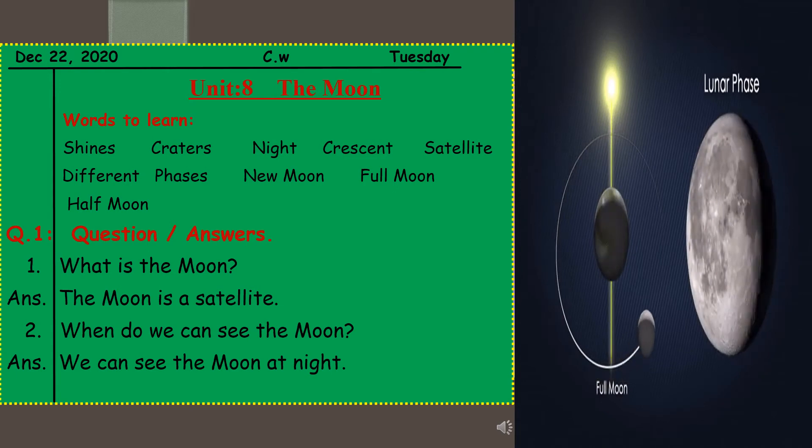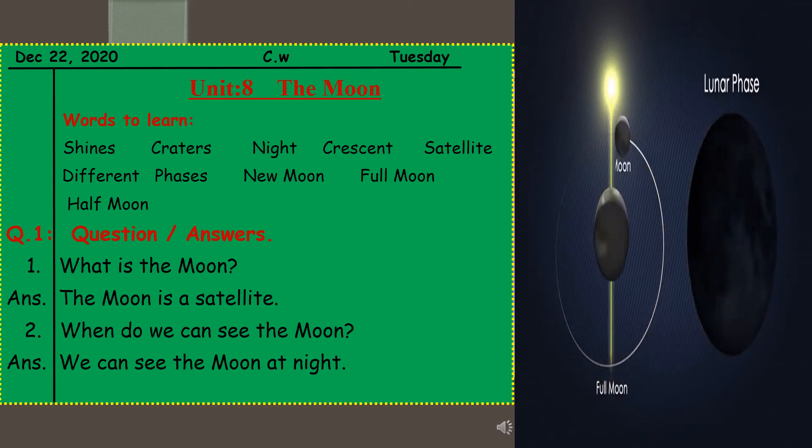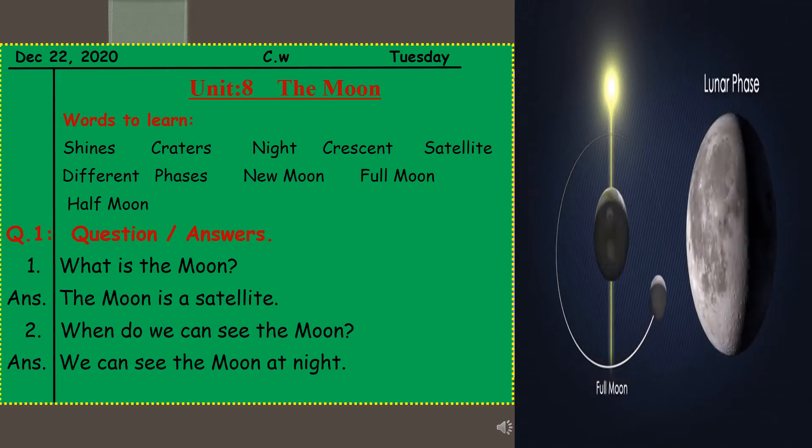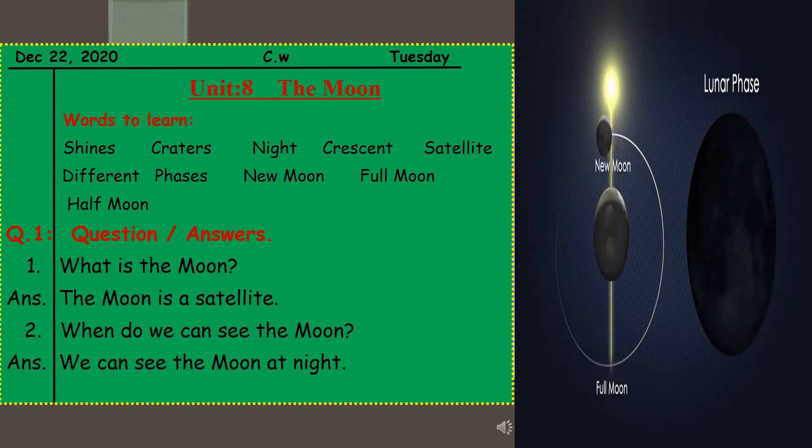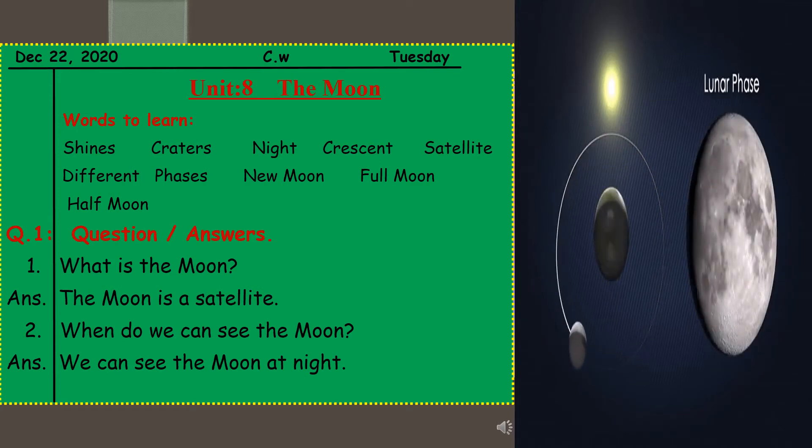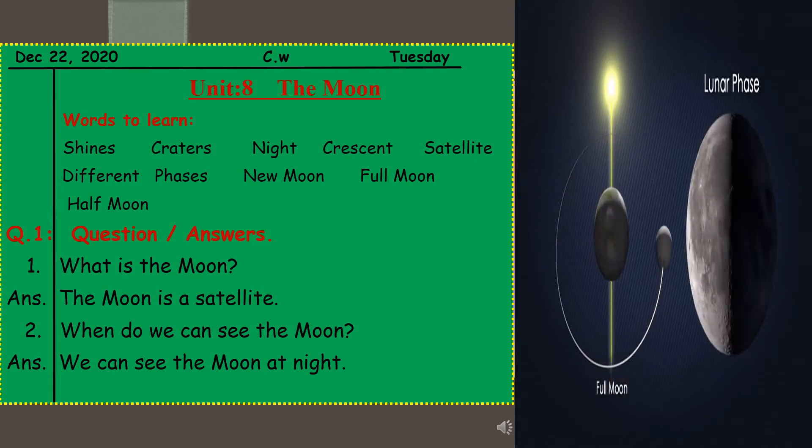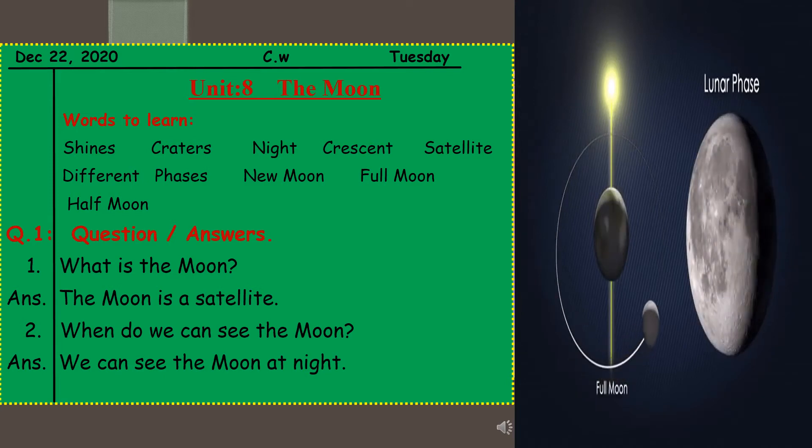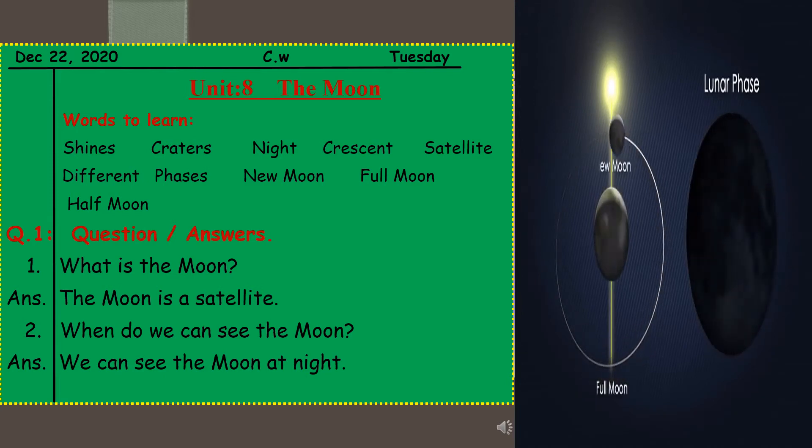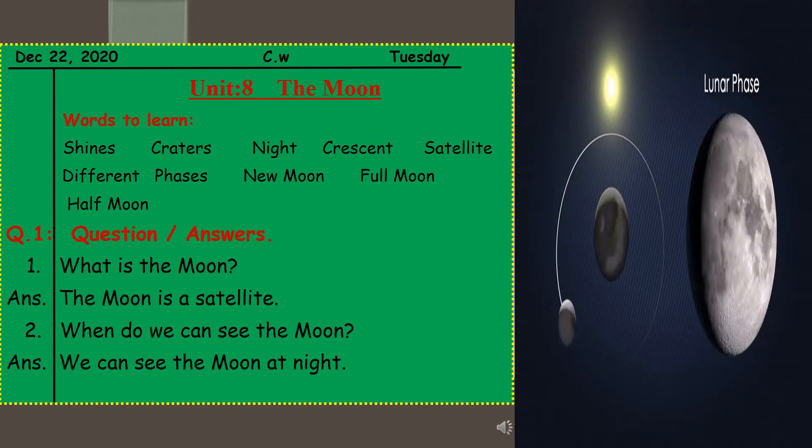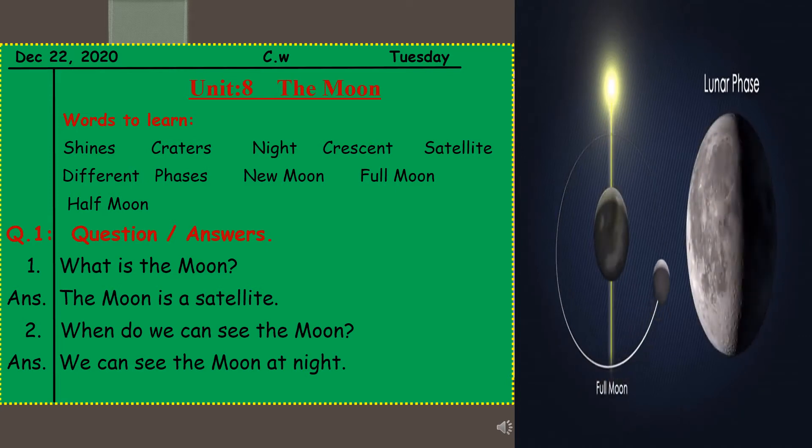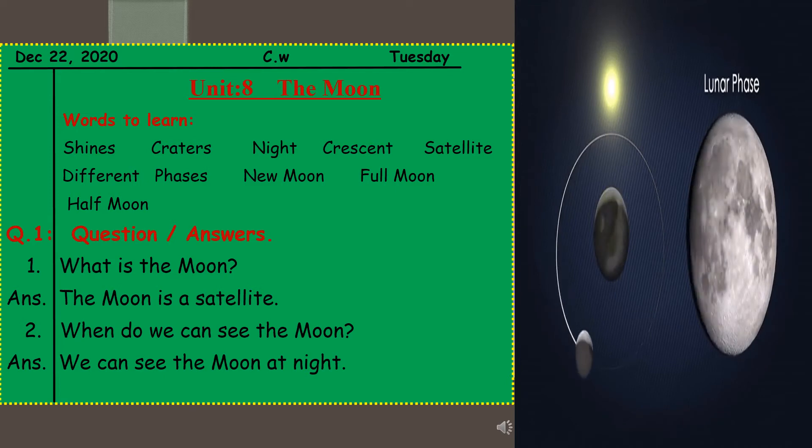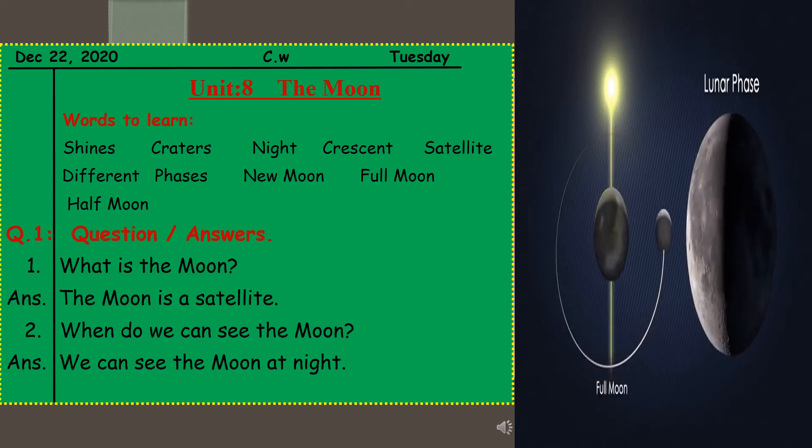Crescent, a thin line that you can notice during when the moon is orbiting the Earth. So during different times of the month you can see different phases of the moon. So crescent is a phase of the moon that you can notice or you can see during the month. Crescent, C-R-E-S-C-E-N-T, crescent.